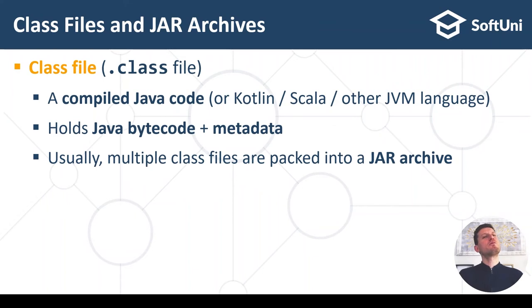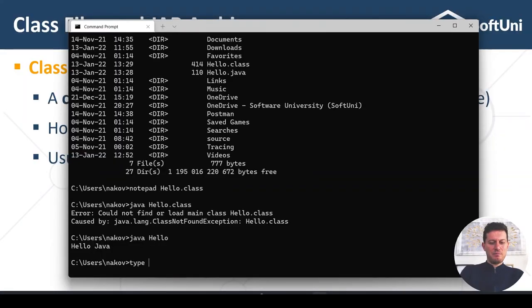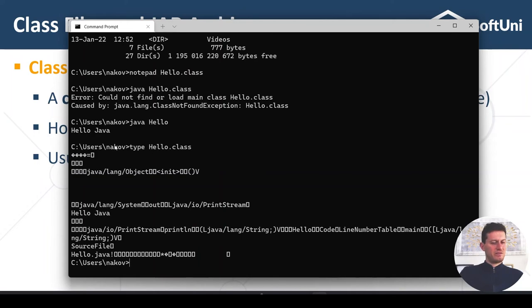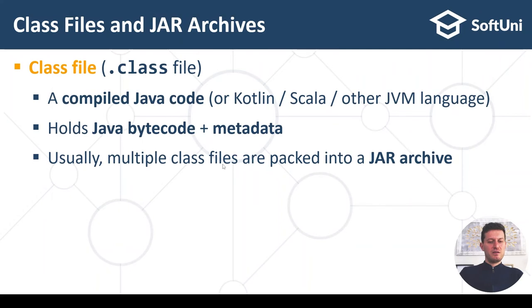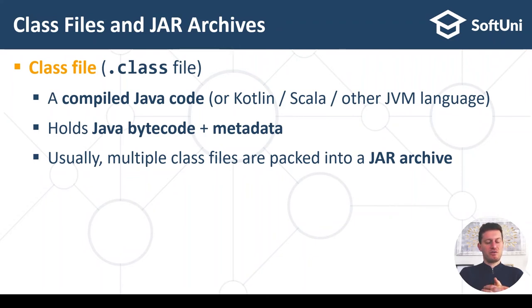Class files hold compiled Java bytecode. It could be Java, Kotlin, Scala, or another JVM-based language — Kotlin and Java compile to the same output class file format. These class files can even be decompiled back to Java, though you lose variable names and some details. The class files hold Java bytecode plus metadata — for example, what class it is, what methods it has, what interfaces it implements.